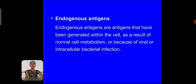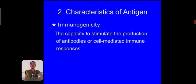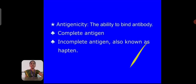The next type is endogenous antigen. Endogenous antigens are antigens that have been generated within the cell as a result of normal cell metabolism or because of viral or intracellular bacterial infection. The two characteristics of antigen are: first, immunogenicity — the capacity to stimulate the production of antibodies or cell-mediated immune response; and second, antigenicity — the ability to bind antibodies. Antigens can be complete antigens or incomplete antigens, also known as haptens.